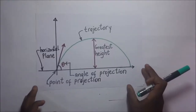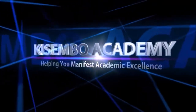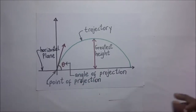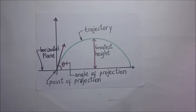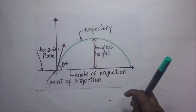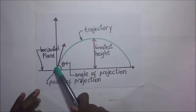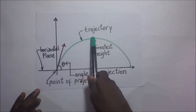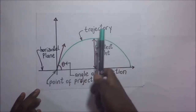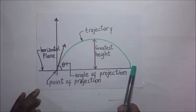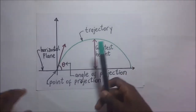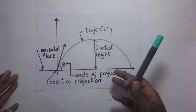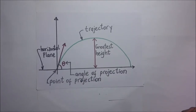Today we introduce ourselves to projectile motion. When you're kicking a ball from a free kick, or throwing a basketball to a colleague or into a hoop, or throwing a stone in the air — the stone will first go up, reach a certain point where it can't go further, and then come back down. As this ball moves up and comes back down, it creates a parabolic curve. This kind of curve is what we call projectile motion.